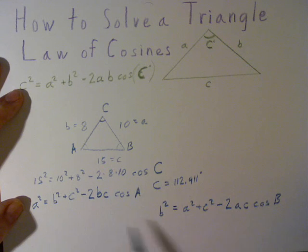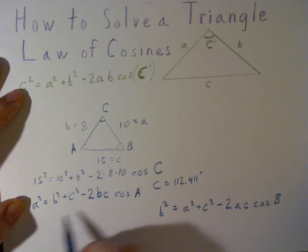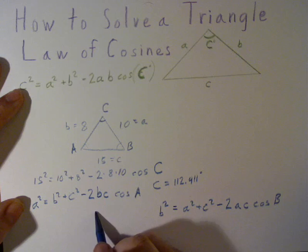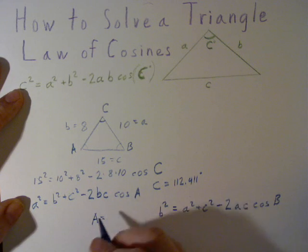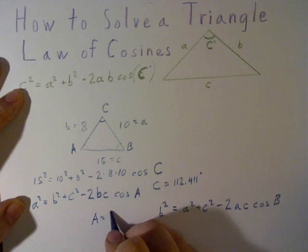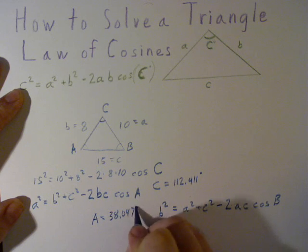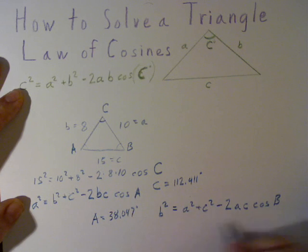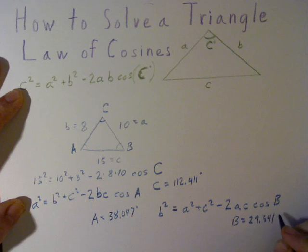Using these, we can solve for each of the angles of the triangle. If we plug in the numbers for A, we'll find out A equals 38.047 degrees and B equals 29.541 degrees.